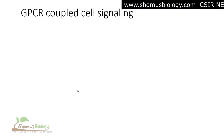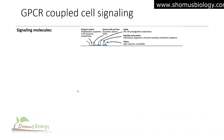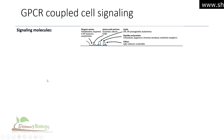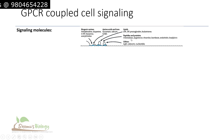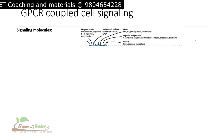The signaling molecules used in GPCR signaling are of various types. They can be biogenic amines like dopamine, histamine, and acetylcholine; amino acids or ions like GABA, calcium, and glutamate; lipids like LPA, prostaglandins, and leukotrienes; peptides and proteins like chemokines and thrombin; or other ligands like light, odorants, and nucleotides. GPCRs can therefore be stimulated and activated by a wide array of chemical and physical stimuli.